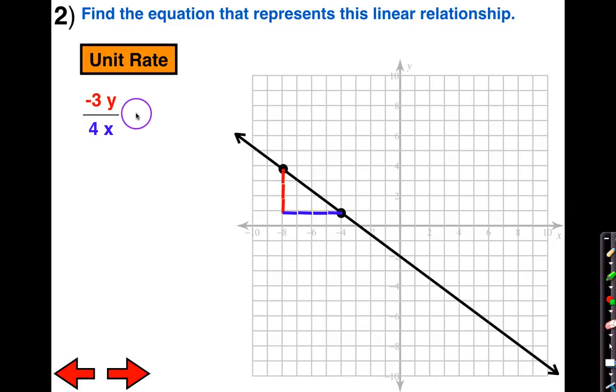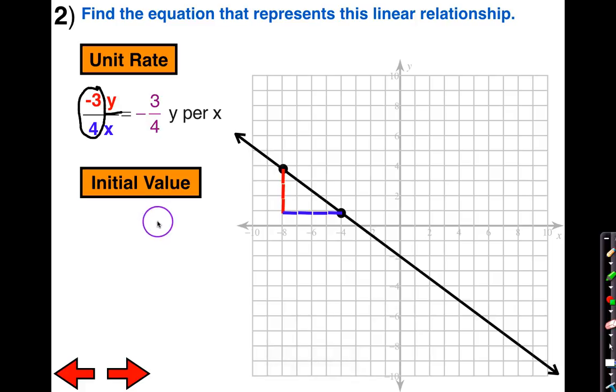This is equivalent to negative 3 fourths y per x. How did I get that? I went ahead and separated it here as negative 3 fourths, and then I said y per x.